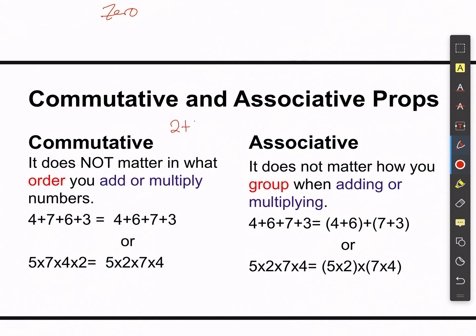The reason these don't apply to subtraction: if I add 2 plus 4 I get 6, and 4 plus 2 also gives 6. But with subtraction, 2 minus 4 equals negative 2 and 4 minus 2 equals positive 2 — two different answers when we switch the order. So since order doesn't matter with addition and multiplication, we can make these rules, but not for subtraction.